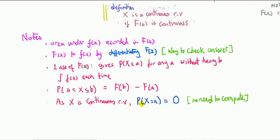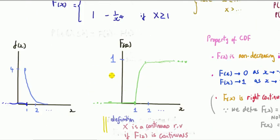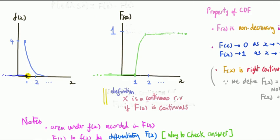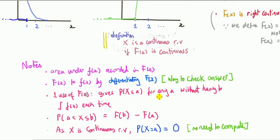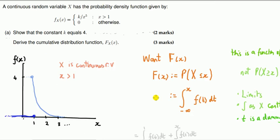Note: for a continuous random variable, the probability that X equals any specific value is zero — no calculation needed. We can also use the CDF to compute the probability that X lies between two values a and b: that's just F(b) minus F(a). For example, with a equals one and b equals two, it's the area from one to two under the PDF, which equals F(2) minus F(1).